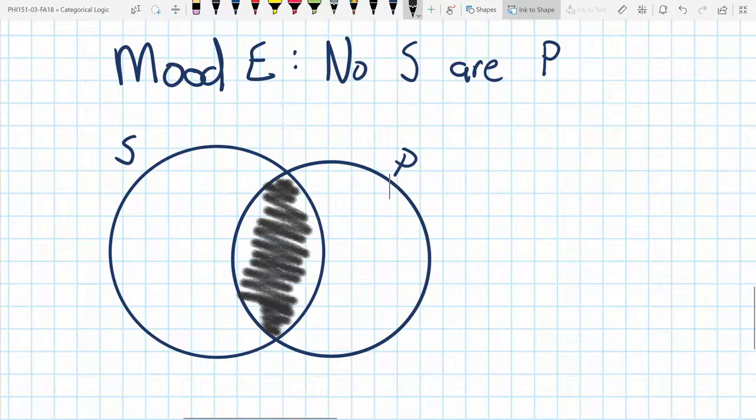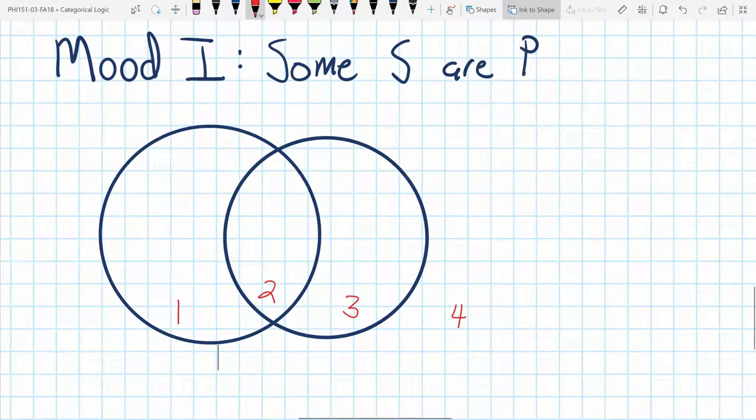Our next mood is mood I. The statement, some S are P. We're talking about the existence of at least one thing that is a member of both set S and set P. So we're not going to use shading. Instead, we're going to use an X. And because it is in both sets, we need to put that in region two.